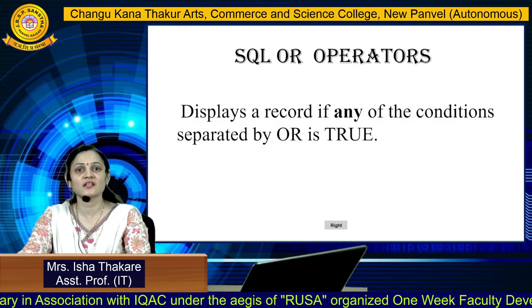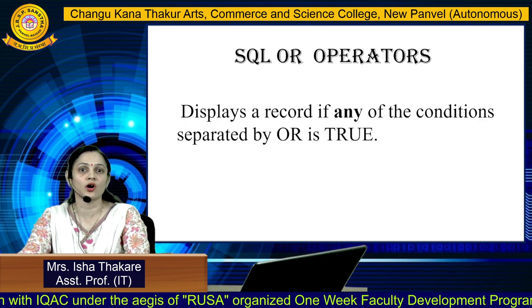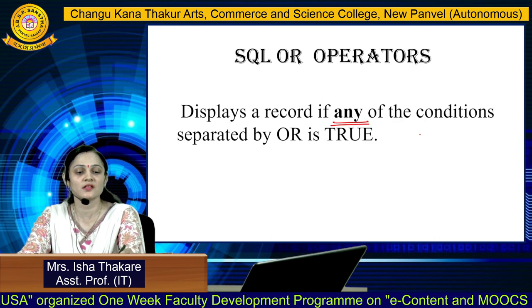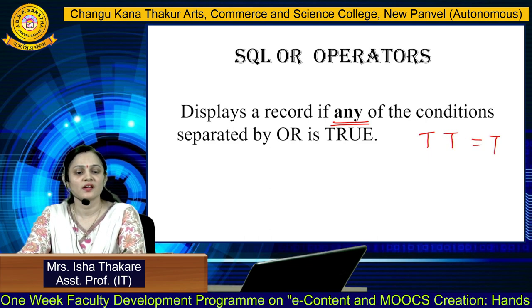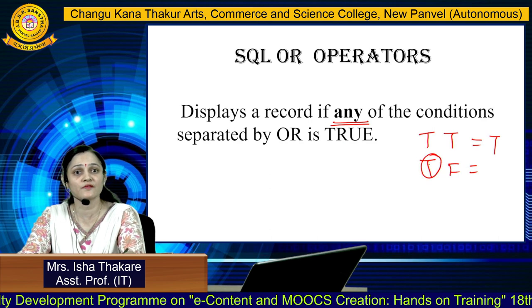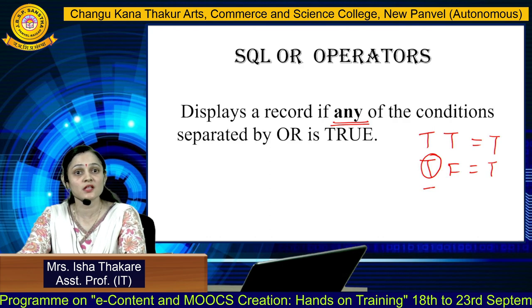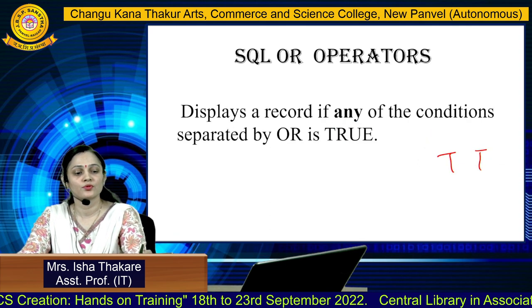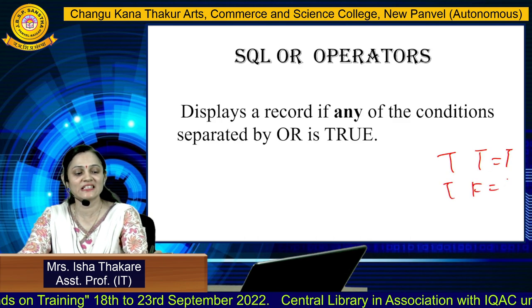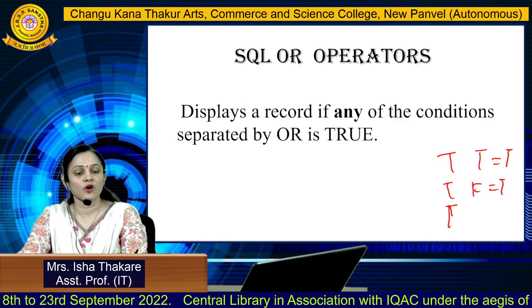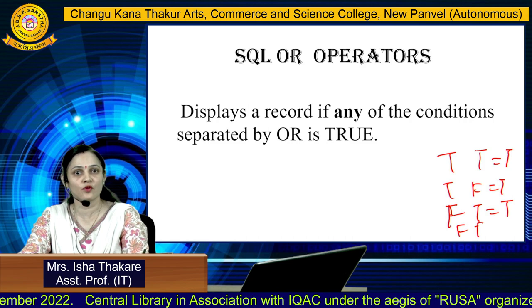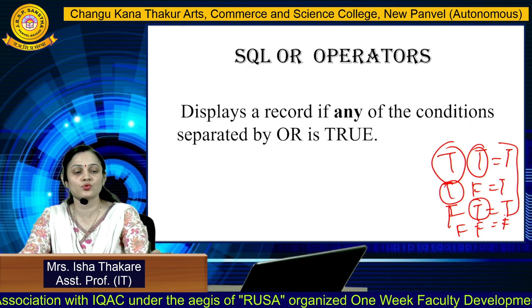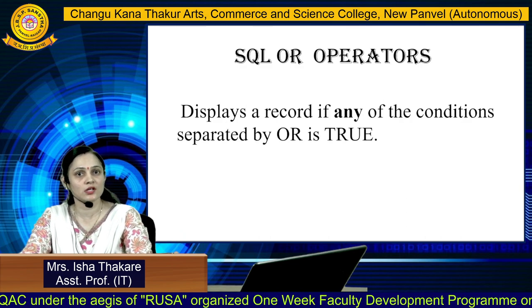Next is the SQL OR operator. It displays a record if any one of the conditions is true. Truth table: true OR true = true; true OR false = true; false OR true = true; false OR false = false. So if any condition is true, you get the output as true.